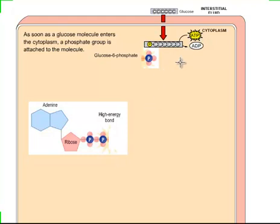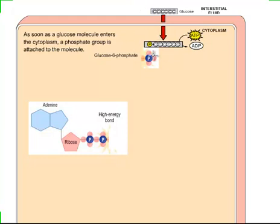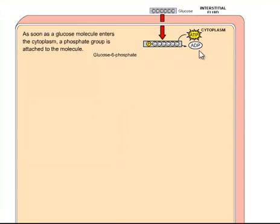So this step consumes an ATP molecule and generates an ADP molecule. That one phosphate from ATP is attached to carbon number six — that's why this molecule is now called glucose-6-phosphate. The reason the cell does this is that the glucose transported into the cell could easily go back out. Addition of this phosphate basically traps the glucose molecule inside the cell and prepares it for further reactions.